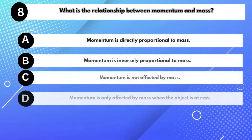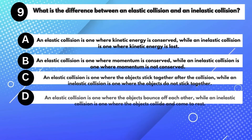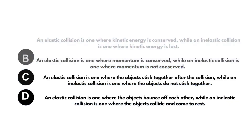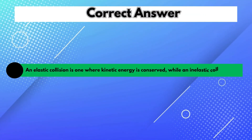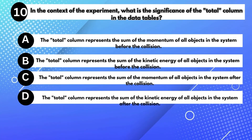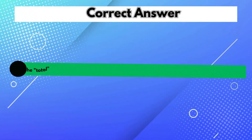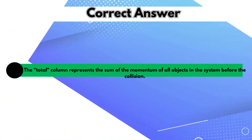What is the relationship between momentum and mass? Answer A: Momentum is directly proportional to mass. What is the difference between an elastic collision and an inelastic collision? Answer A: An elastic collision is one where kinetic energy is conserved, while an inelastic collision is one where kinetic energy is lost. What is the significance of the total column in the data tables? Answer A: It represents the sum of the momentum of all objects in the system.